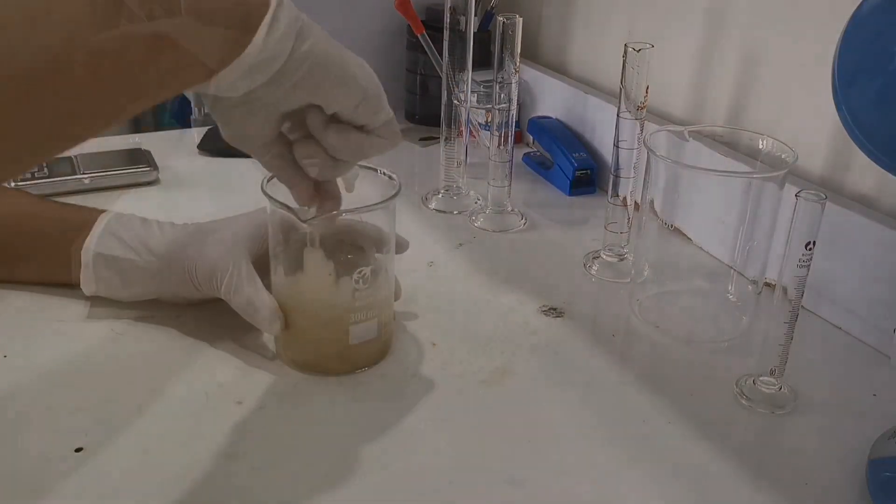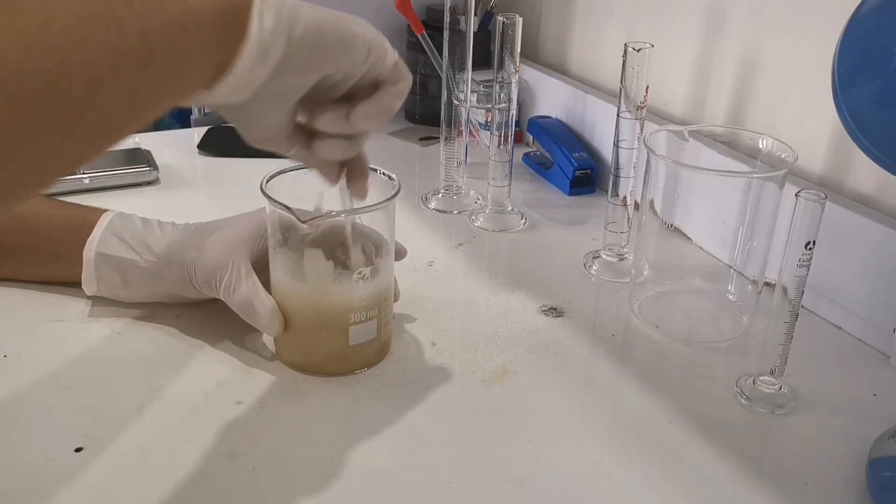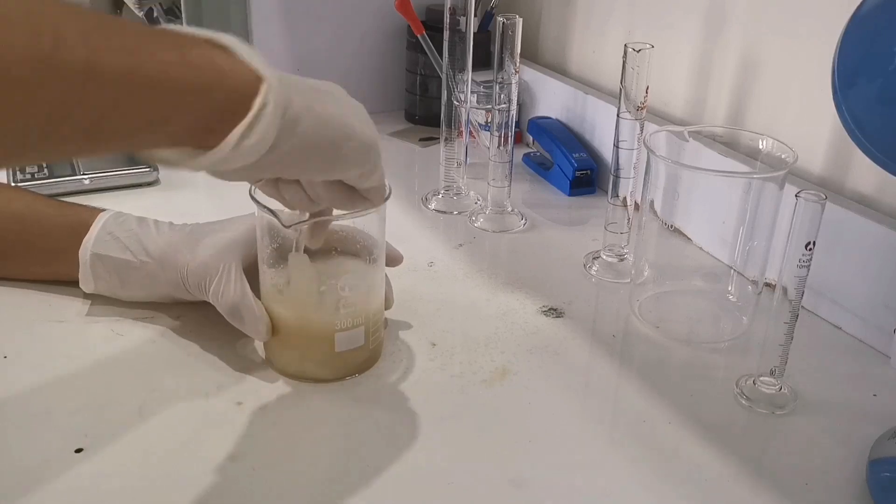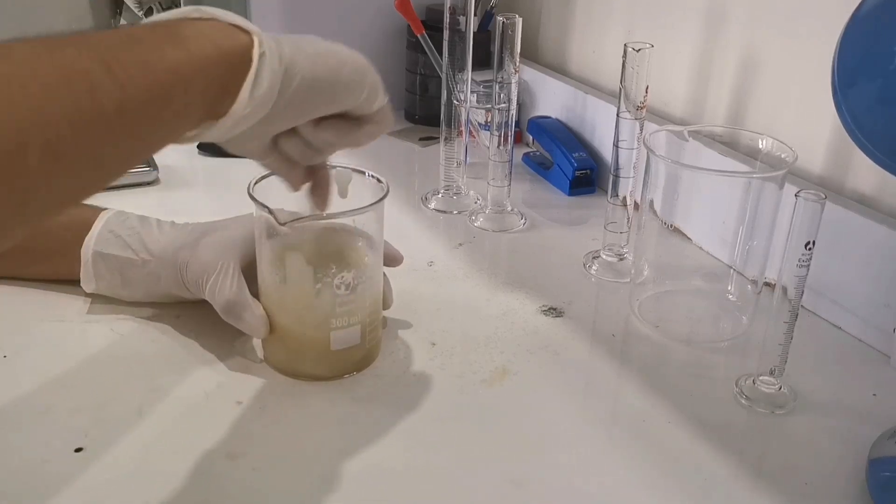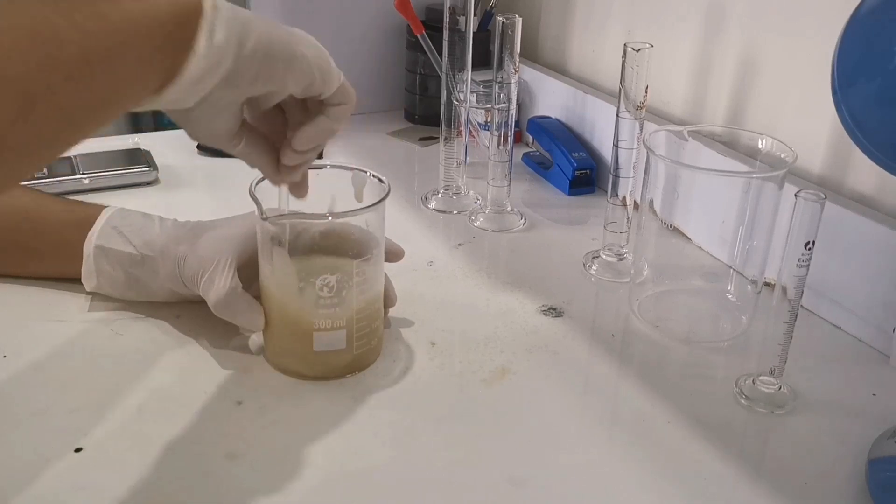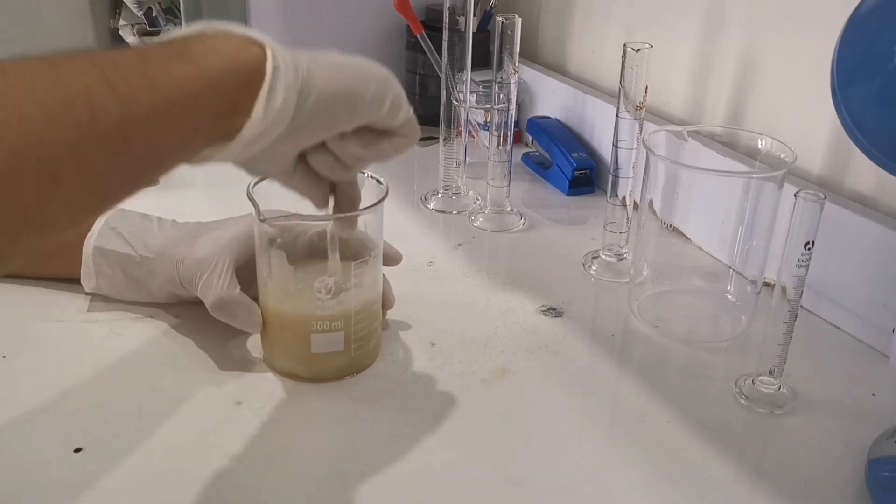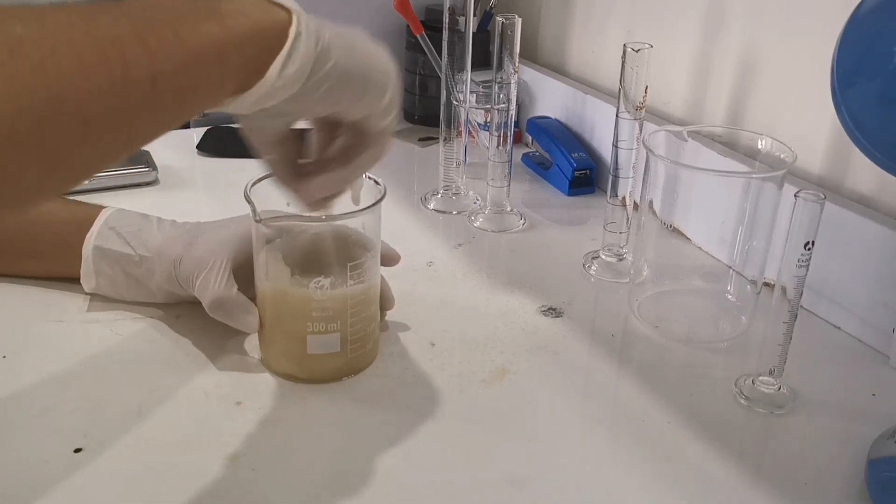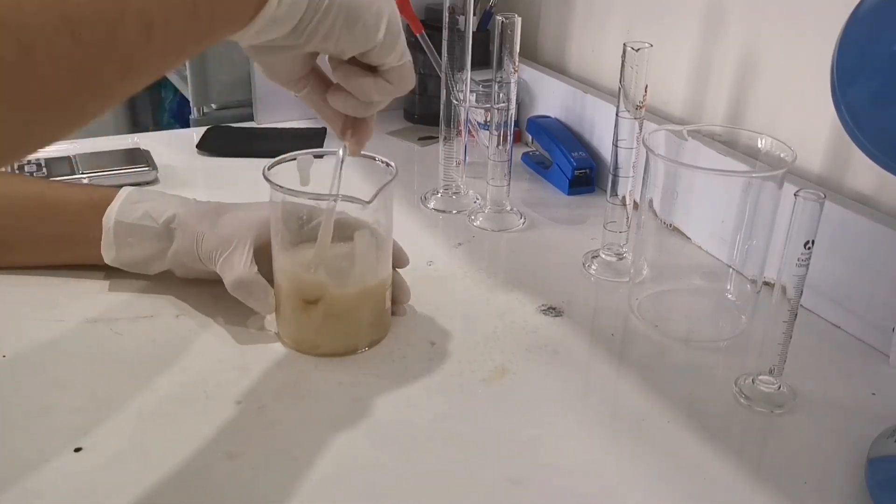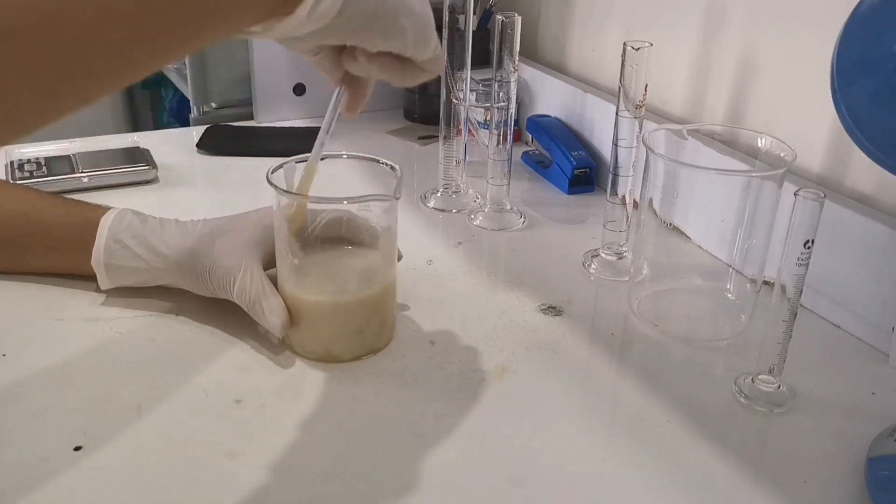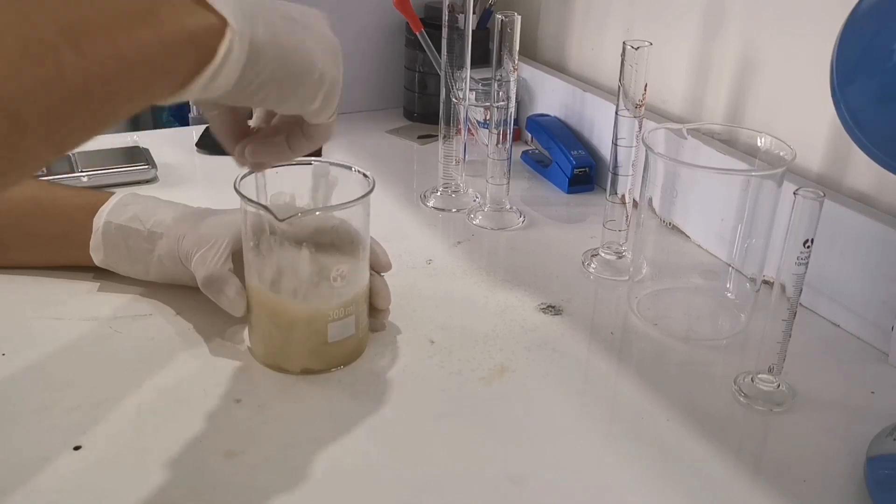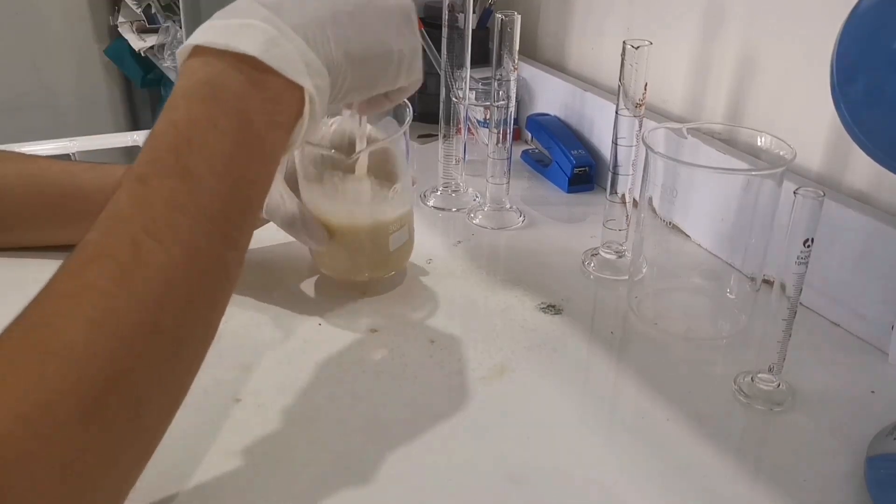After adding the ethanol, your solution will get much softer and your solution will be more white than before. Some of the glue is stuck at the bottom or the wall of the beaker. So it's important to scrape it off and mix it with the solution.